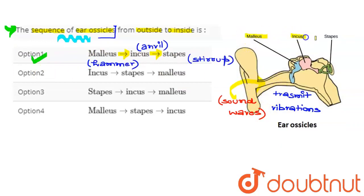This shows the ear—the malleus, incus, and stapes. The external ear receives the sound waves. And here, what is happening?